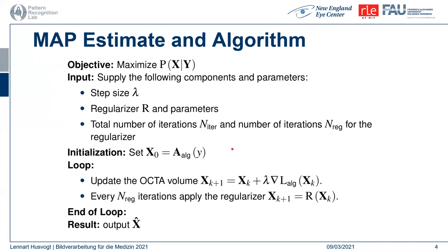The objective is to maximize the probability of the reconstructed OCTA volume X given the observations of the structural OCT volume Y — these are our repeated B-scans over time. Parameters are the step size lambda for the update step, the regularizer and its associated parameters, and the total number of iterations. The OCTA volume X is initialized using one of the OCTA formulas. The regularizer and the update step are then applied in turn for a preset number of iterations, or until the reconstructed volume X does not change anymore. This gradient is based, according to Plona's model, on amplitude decorrelation, interframe variance, or speckle variance. The output is our reconstructed volume X-hat.